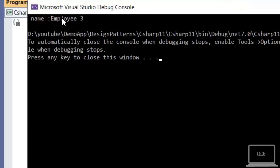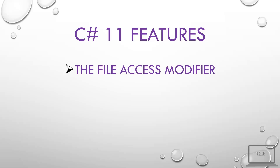So those are the two changes in C# 11 for string literals. Another feature that C# 11 introduced is a new access modifier — the file access modifier. The file access modifier basically controls the access of a class.